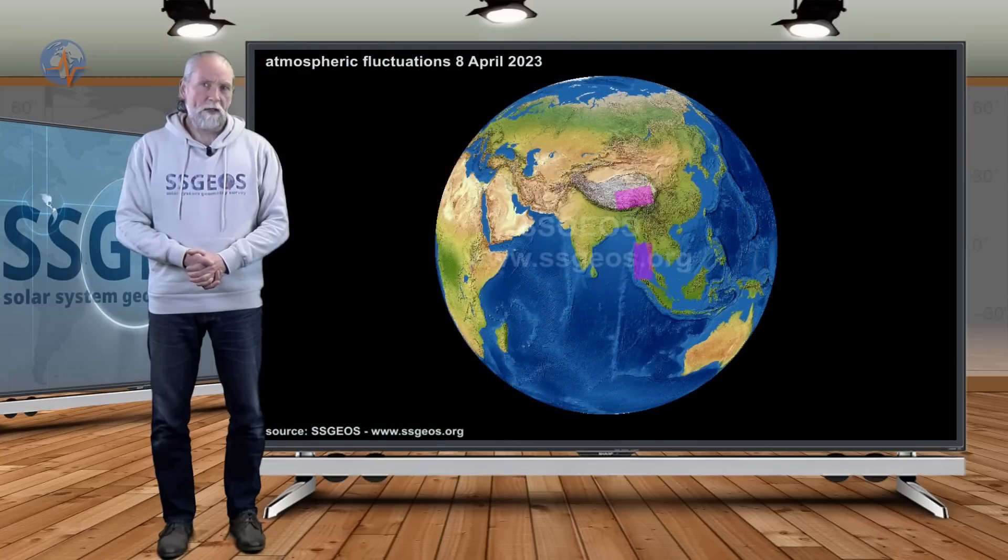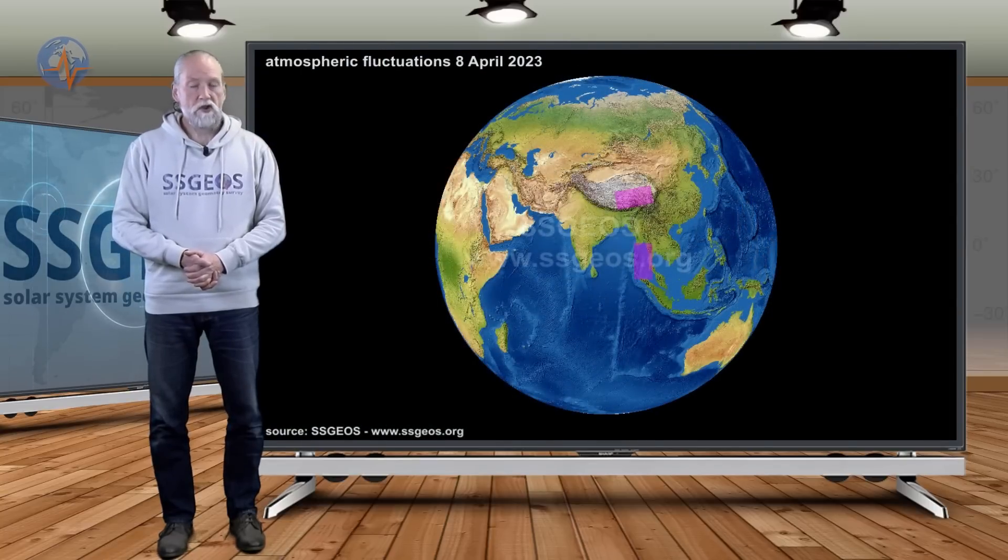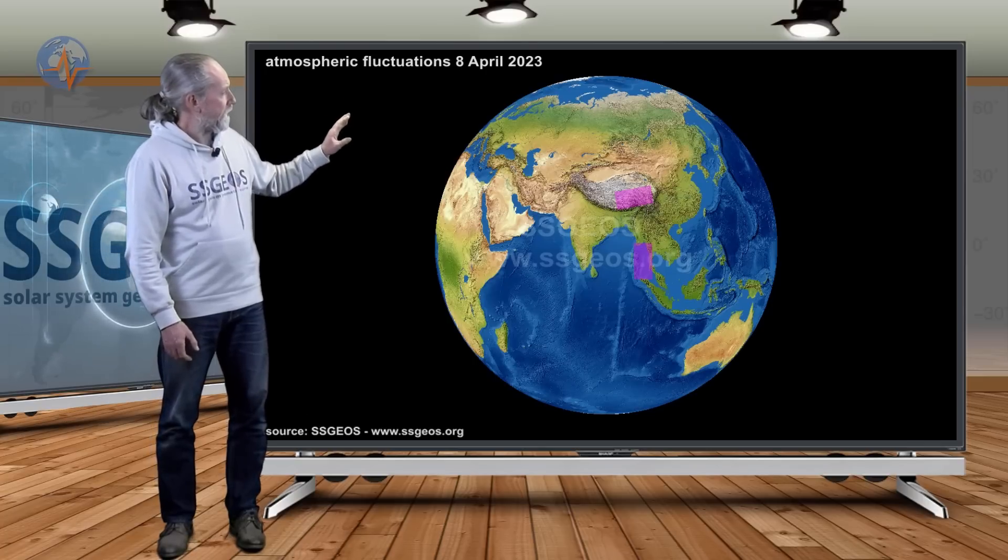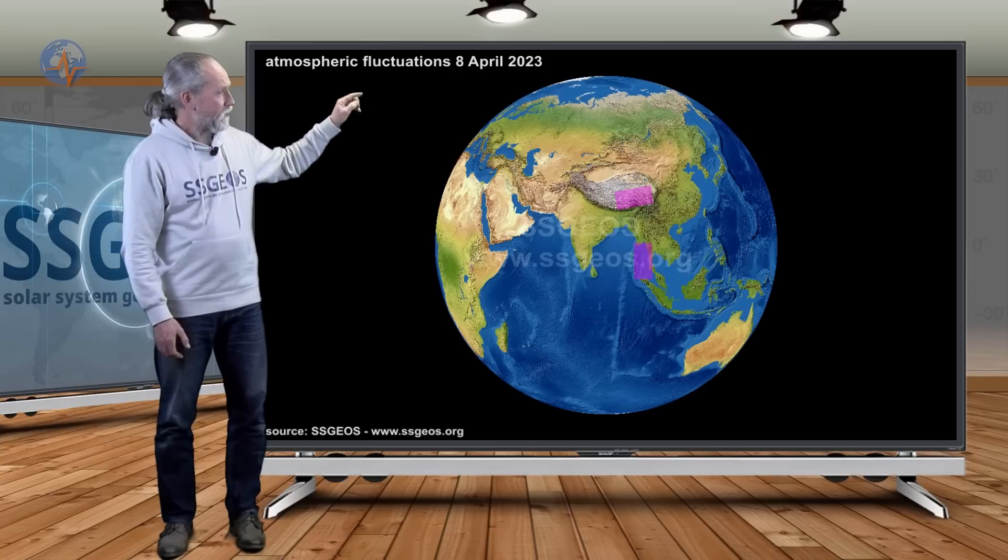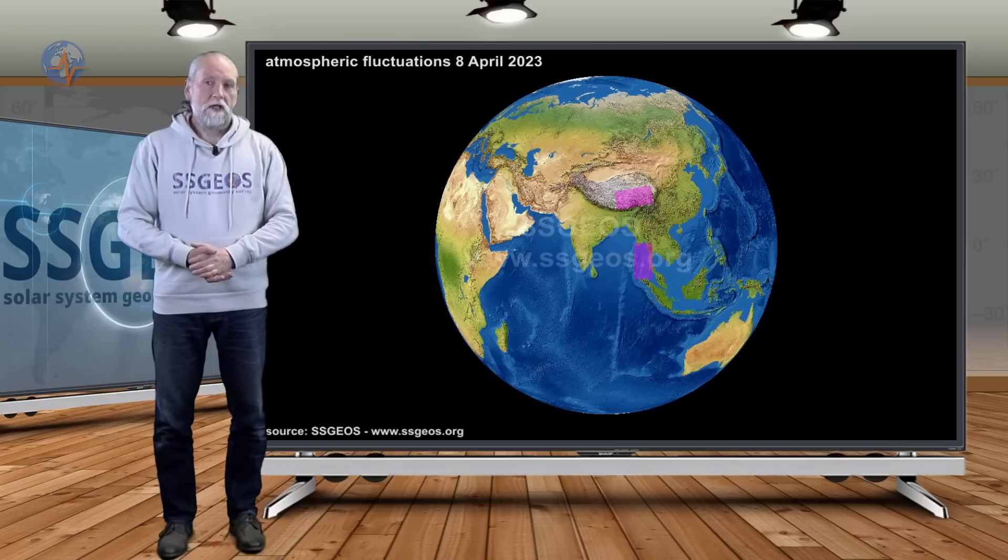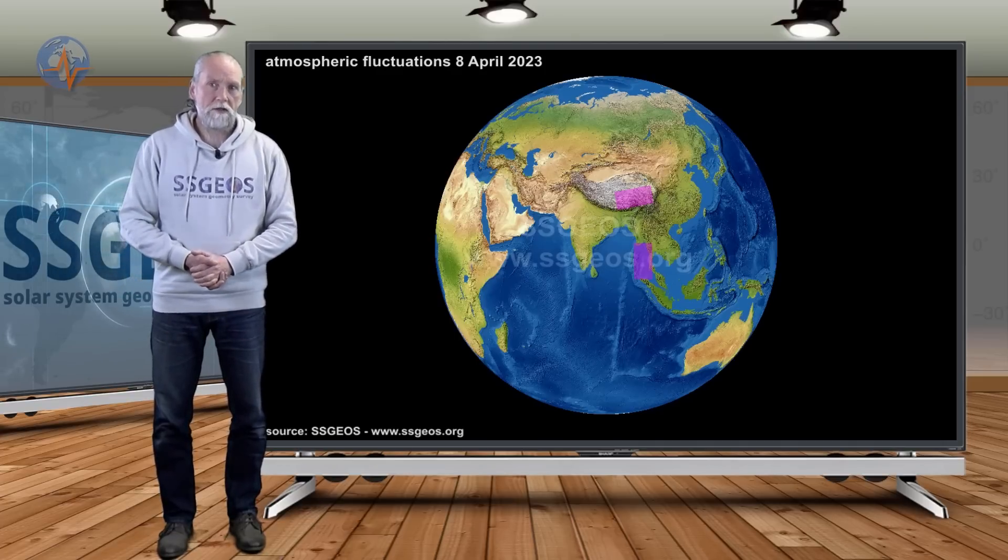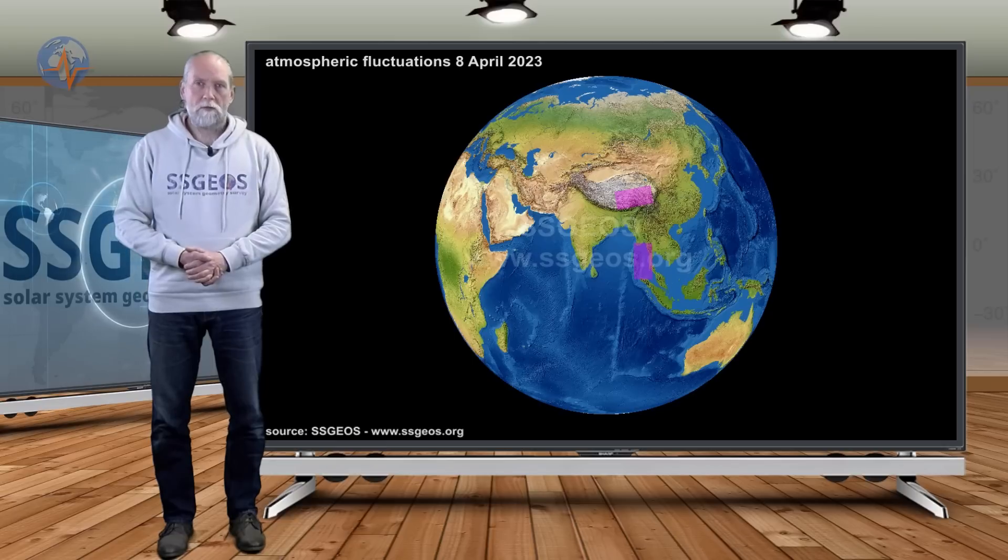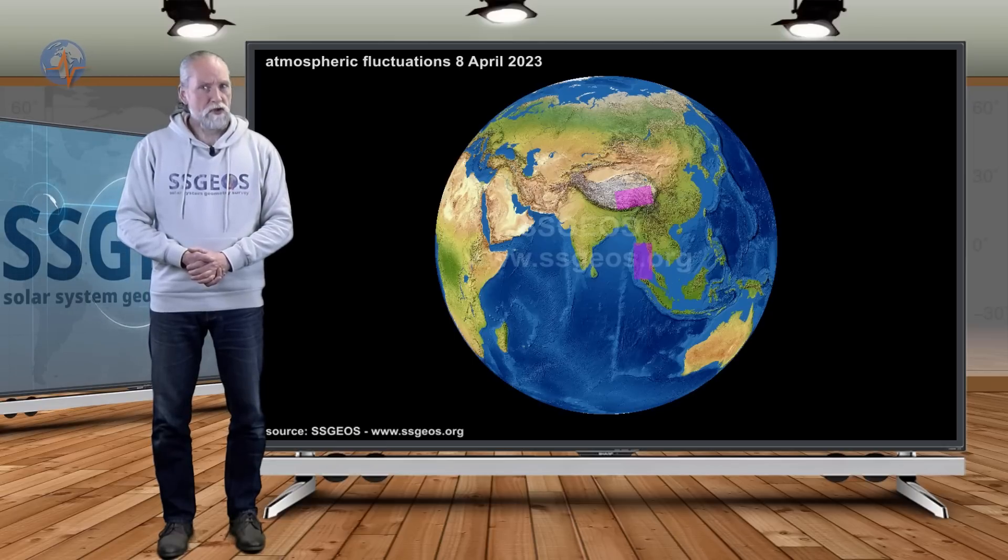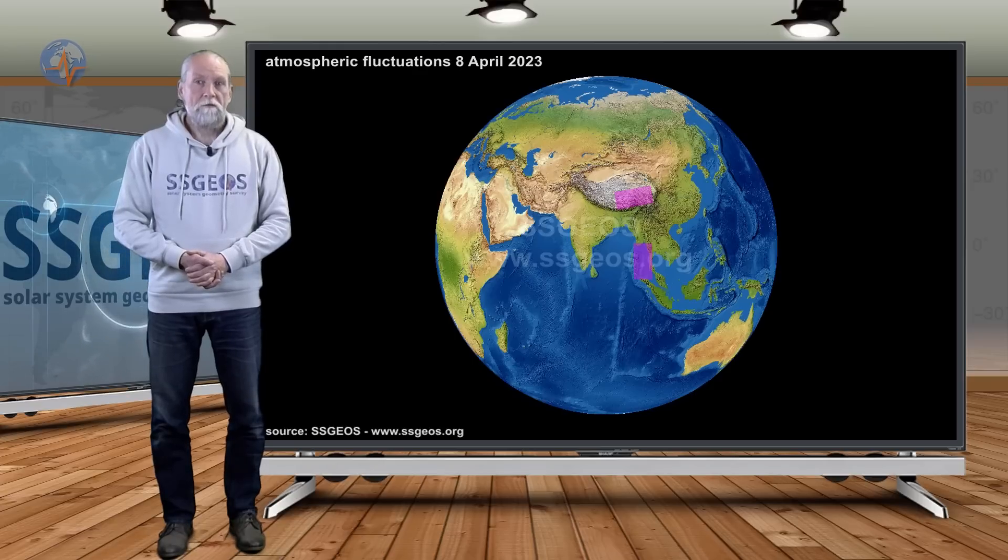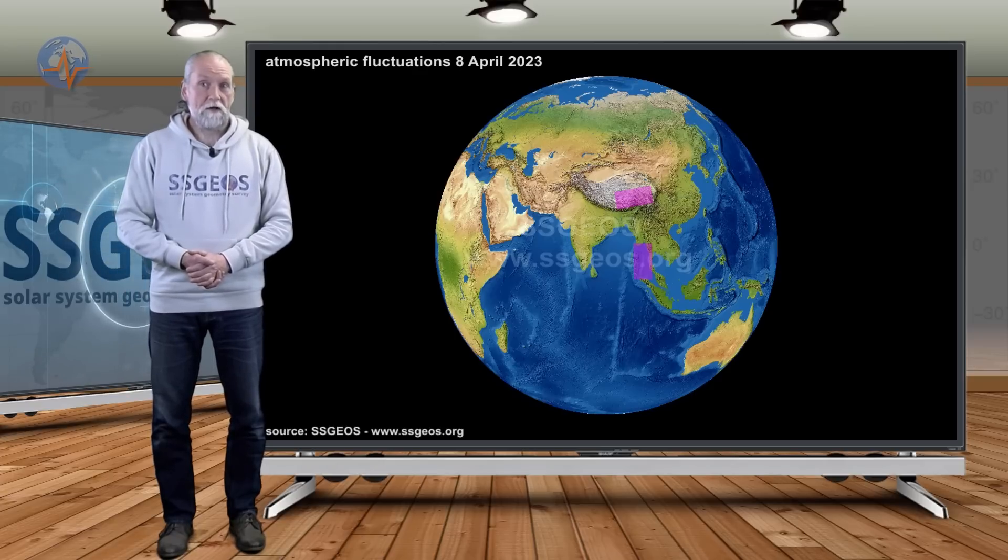Yesterday night we picked up an atmospheric fluctuation over parts of Asia, in the Tibetan region, Assam region, and to the south the Nicobar Islands region. This is a rough estimate. Interestingly, within 15 hours, mid-5 magnitude seismic activity occurred at the Nicobar Islands. It was a swarm and reached magnitude 5.5 to 5.7. This happened within 15 hours, pretty fast actually.